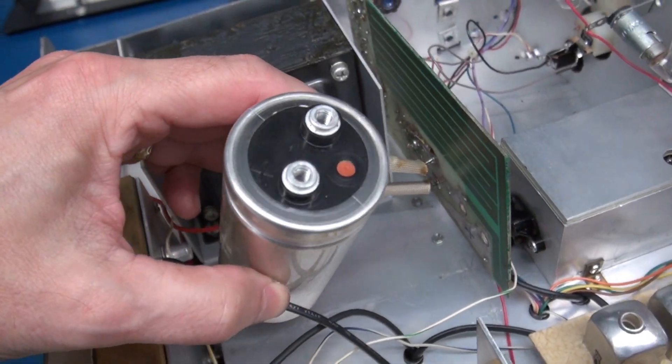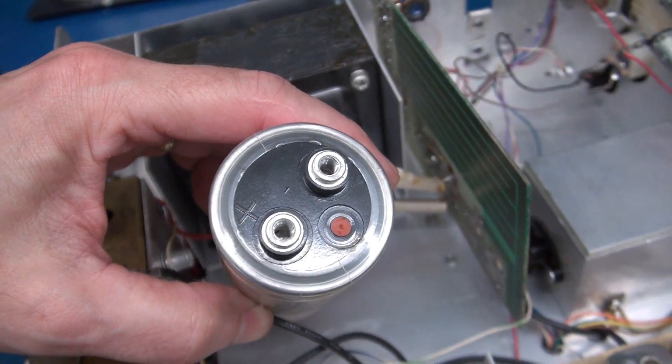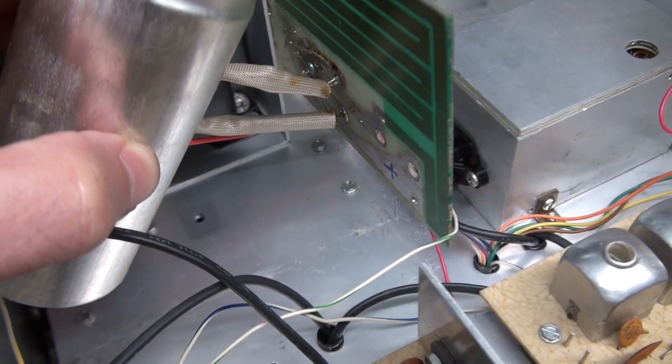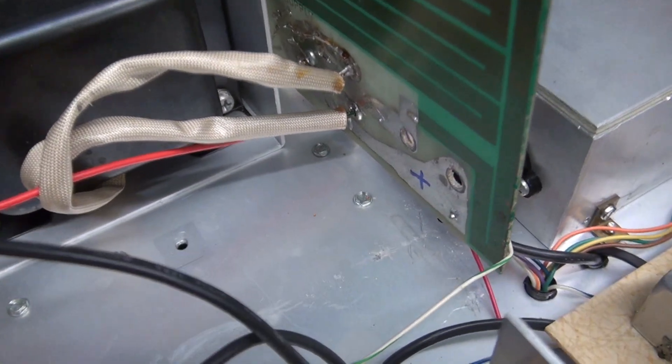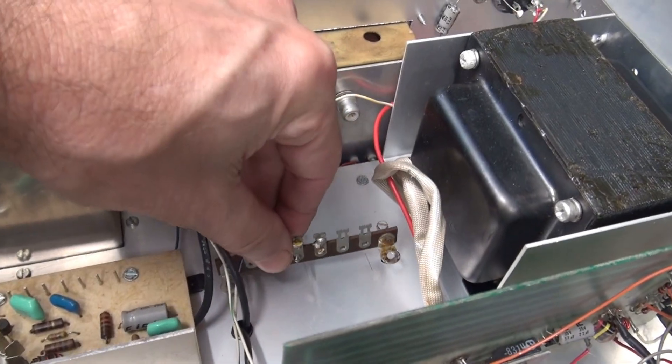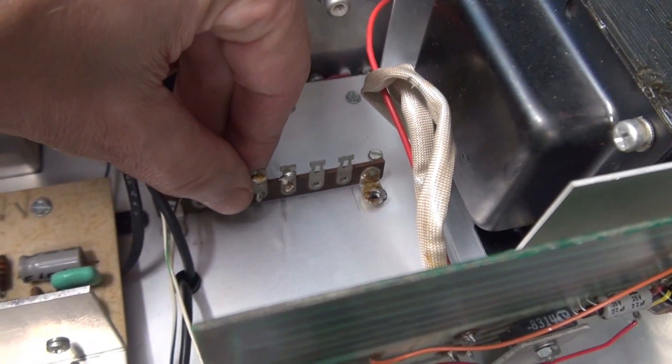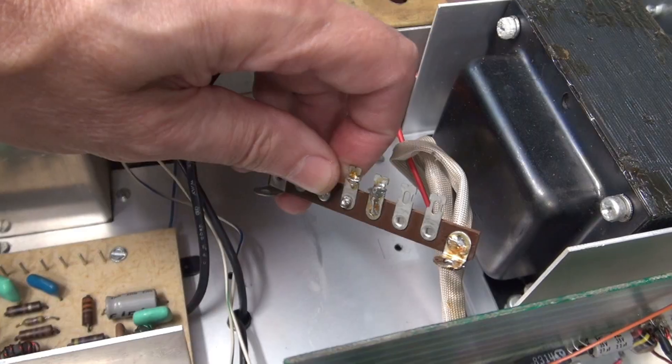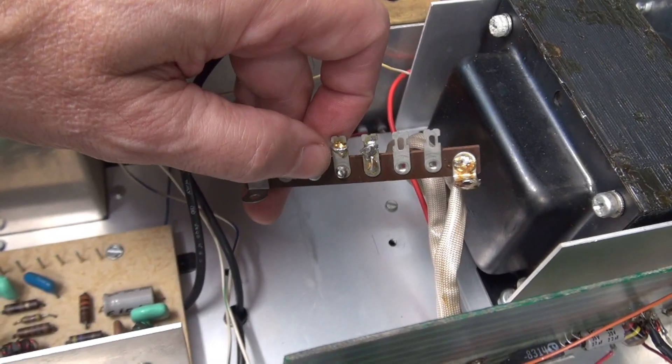So removing the cap, you'll see the positive and negative are marked. For safety, go ahead and put a little plus sign on your circuit board so you don't reverse that. So I found an old terminal board that has the same span of the mounts as the original bracket did. So I'm going to clean this up, pop it in, and mount the caps.